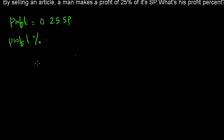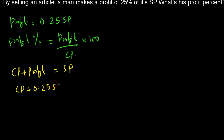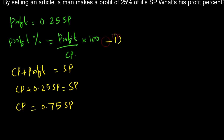To find the profit percentage we need the cost price. We have the profit and the selling price, so we can find the cost price using: cost price plus profit equals selling price. So CP plus 0.25 SP equals SP, which gives CP equals SP minus 0.25 SP, equal to 0.75 SP.